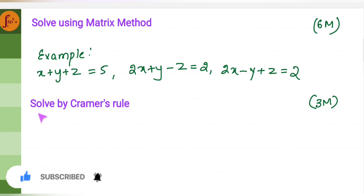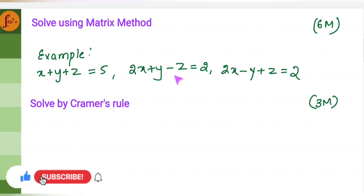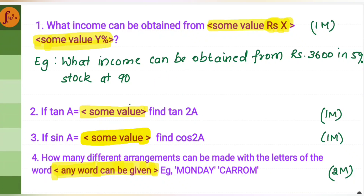Another 3 marker is to solve by Cramer's rule. There is also an easy trick to multiply matrices — I have given a tip on that since mistakes often happen during matrix multiplication. For 1 markers, one example comes from stocks and shares — they will tell you what income can be obtained from a given amount at a given percentage. In trigonometry, you can score a 1 marker easily.